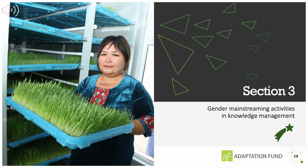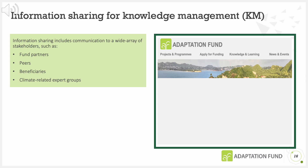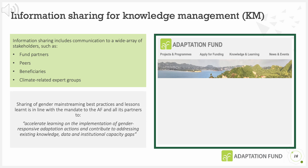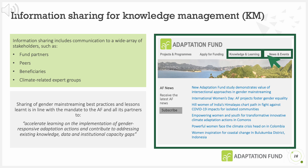Section 3: Gender mainstreaming activities in knowledge management. Implementing entities are encouraged to share with the Adaptation Fund their outreach, communication and information on the progress, challenges and innovations on gender equality and women's empowerment related to Adaptation Fund projects or programmes. Information sharing also includes communication with a wide array of stakeholders such as fund partners, peers, other implementing or executing entities, beneficiaries and climate-related expert groups. Sharing of gender mainstreaming best practices and lessons learnt is in line with the mandate to the Adaptation Fund and all its partners to accelerate learning on the implementation of gender-responsive adaptation actions and contribute to addressing existing knowledge, data and institutional capacity gaps. The Adaptation Fund's website hosts knowledge products and news stories under Knowledge and Learning and News and Events.